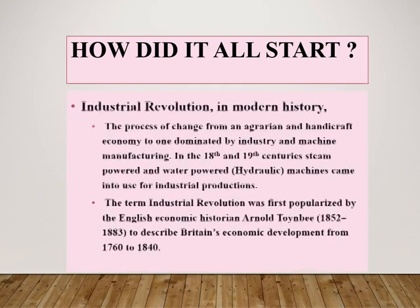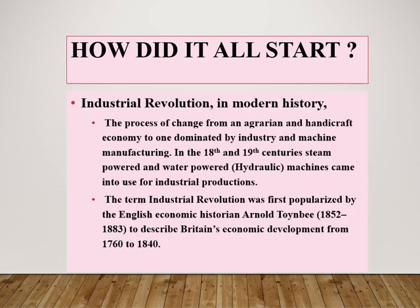How did it all start? The Industrial Revolution, in modern history, refers to the process of change from an agrarian and handicraft economy to one dominated by industry and machine manufacturing. This process began in Britain in the 18th century and from there spread to other parts of the world. Steam-powered and water-powered hydraulic machines came into use for industrial production.